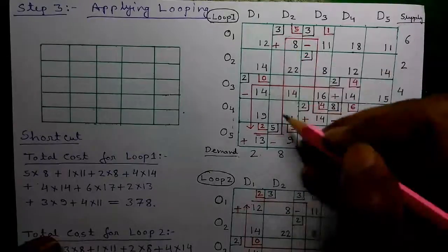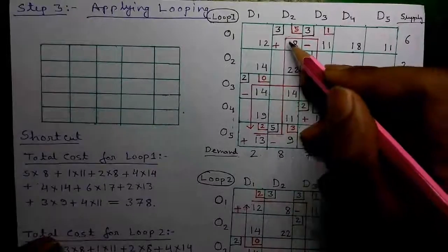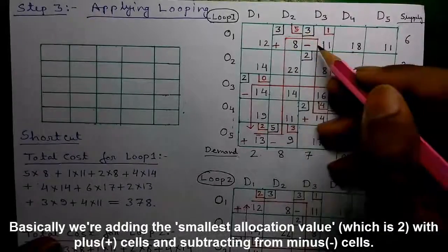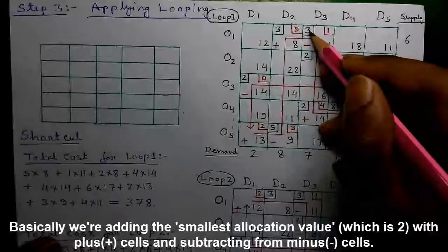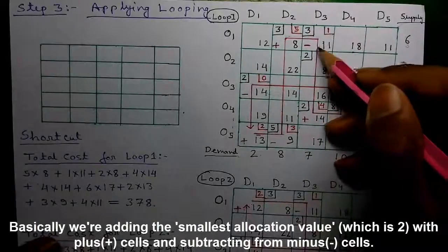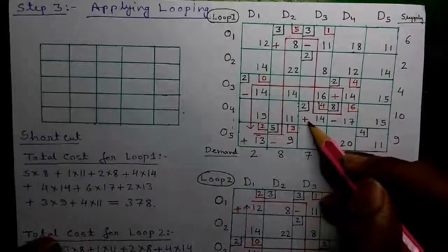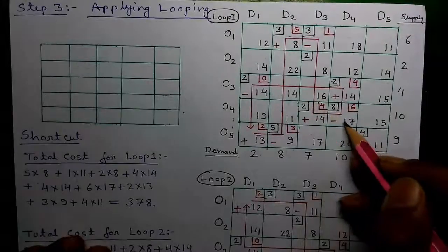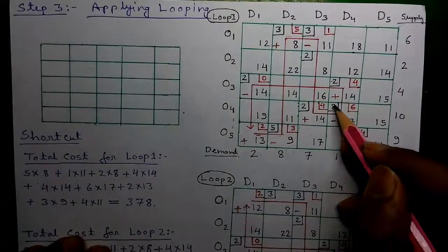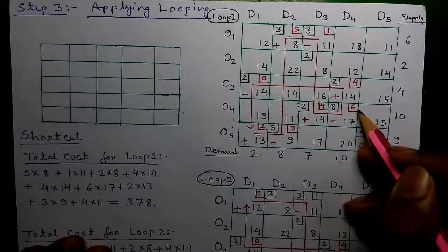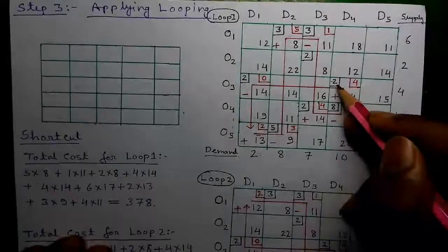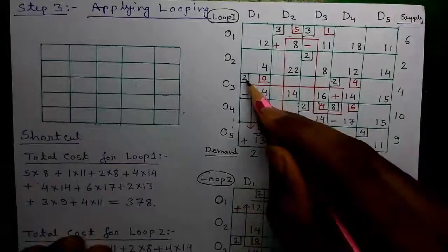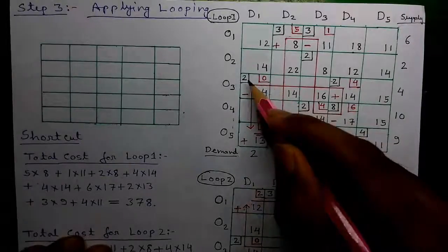Continuing in alternating order: the next cell is a plus cell, so present allocation 3 plus 2 equals 5, the new allocation. The next is a minus cell: 3 minus 2 equals 1, the new allocation. The next is a plus cell: 2 plus 2 equals 4. Then a minus cell: 8 minus 2 equals 6. Next, a plus cell: 2 plus 2 equals 4. Finally, the last minus cell: 2 minus 2 equals 0 — meaning no allocation remains at that cell.